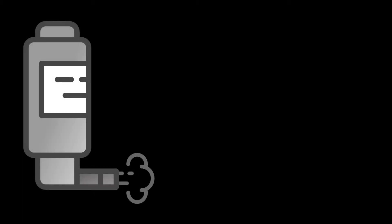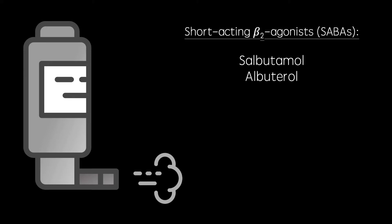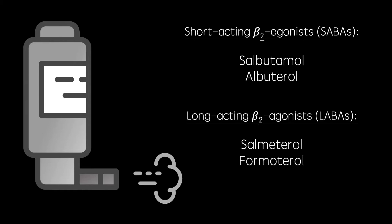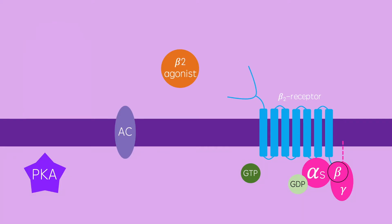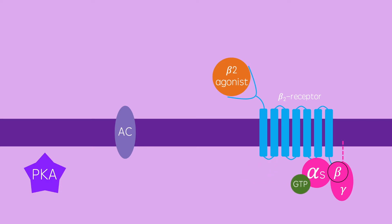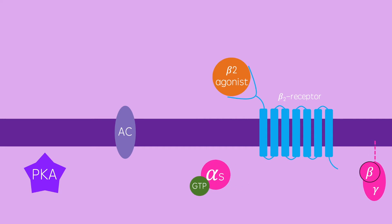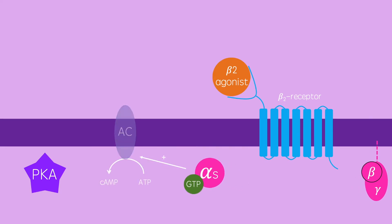And finally, I'm going to talk about beta-2 agonists. Short-acting beta-2 agonists such as salbutamol need to be administered three to four times daily, while long-acting beta-2 agonists such as salmeterol need to be administered only once or twice daily. Beta-2 receptors are GS coupled, meaning their activation by beta-2 agonists activates adenyl cyclase, which increases the concentration of cyclic AMP, which goes on to increase the activity of protein kinase A.